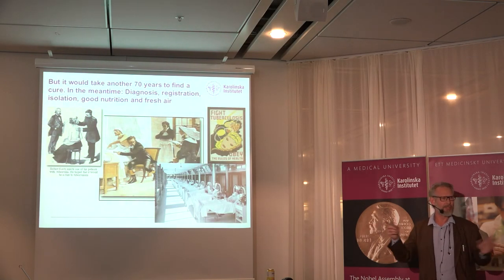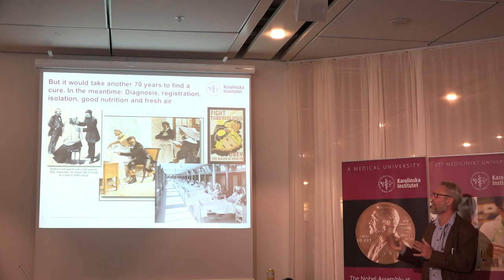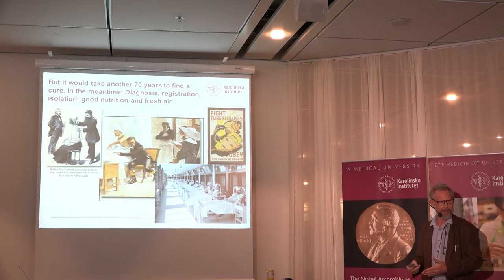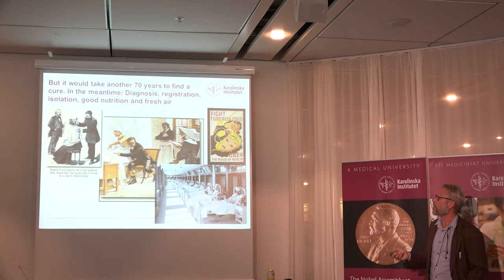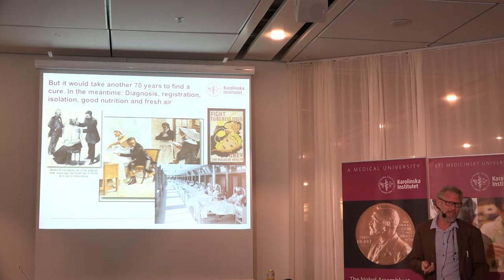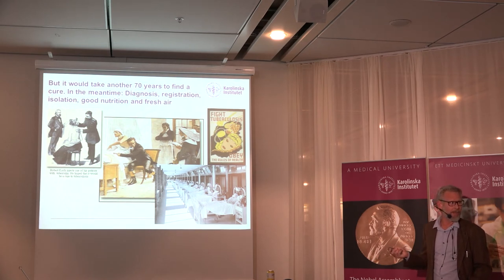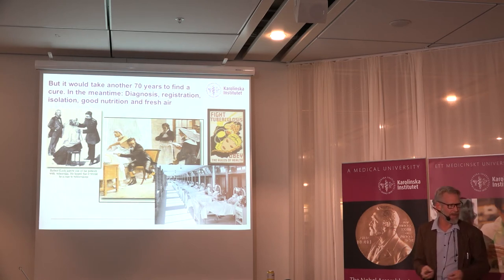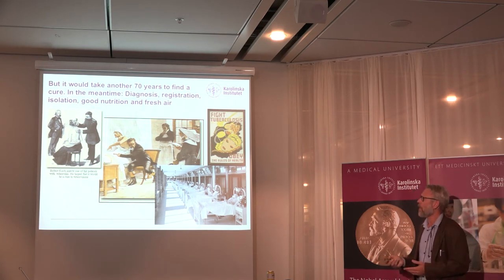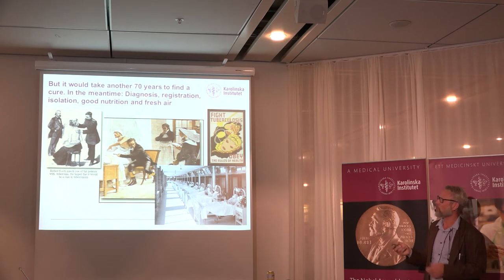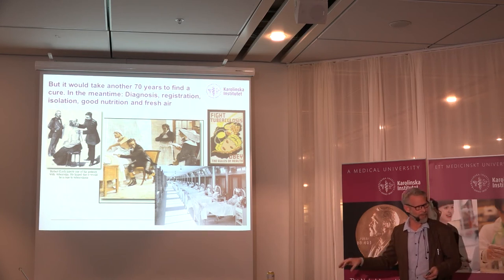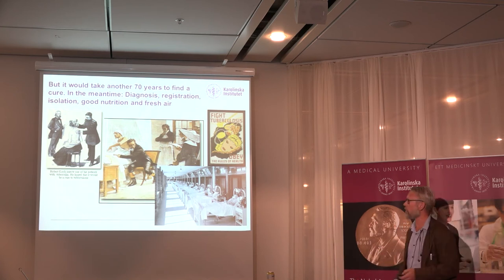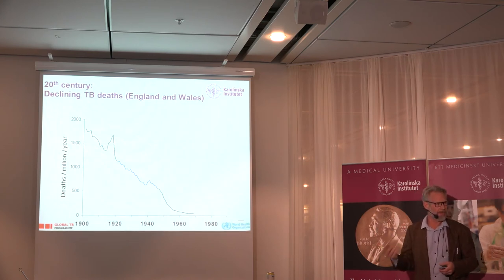It took 70 years from the discovery of the bacteria until there was a cure. In the meantime, the main intervention was putting people in sanatoria — the sanatoria era. Treatment was fresh air, sunlight, good food, and some surgical interventions like collapsing lungs, which had very marginal efficacy. There were some important public health interventions: diagnosing, registering, and isolating people helped reduce transmission to some extent. The sanatoria took people away from society, reducing the spread of the disease.